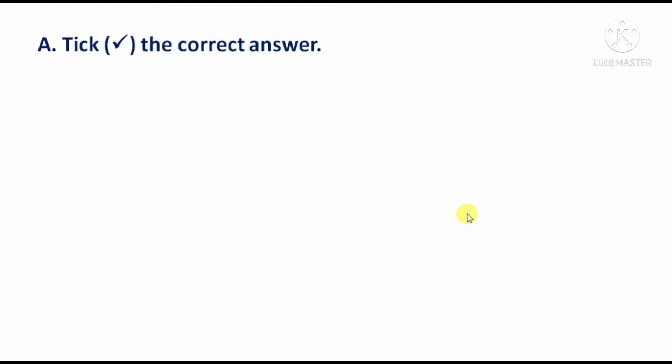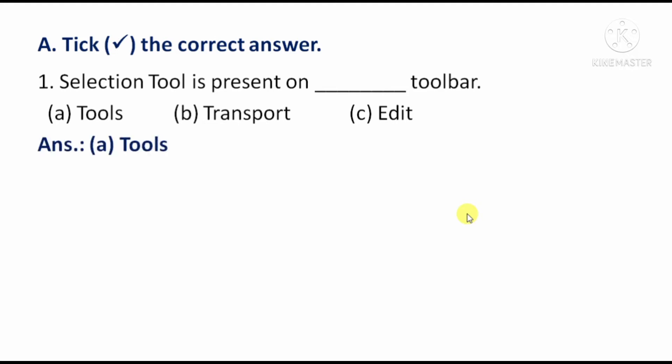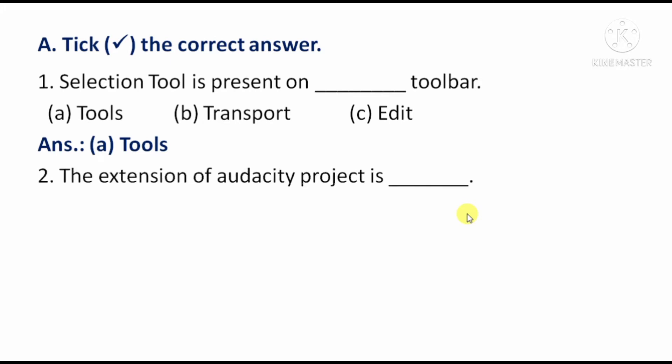Section C: Take the correct answer. Question 1 — Selection tool is present on which toolbar? Option A: Tools. Option B: Transport. Option C: Edit. The right answer is Option A, Tools.